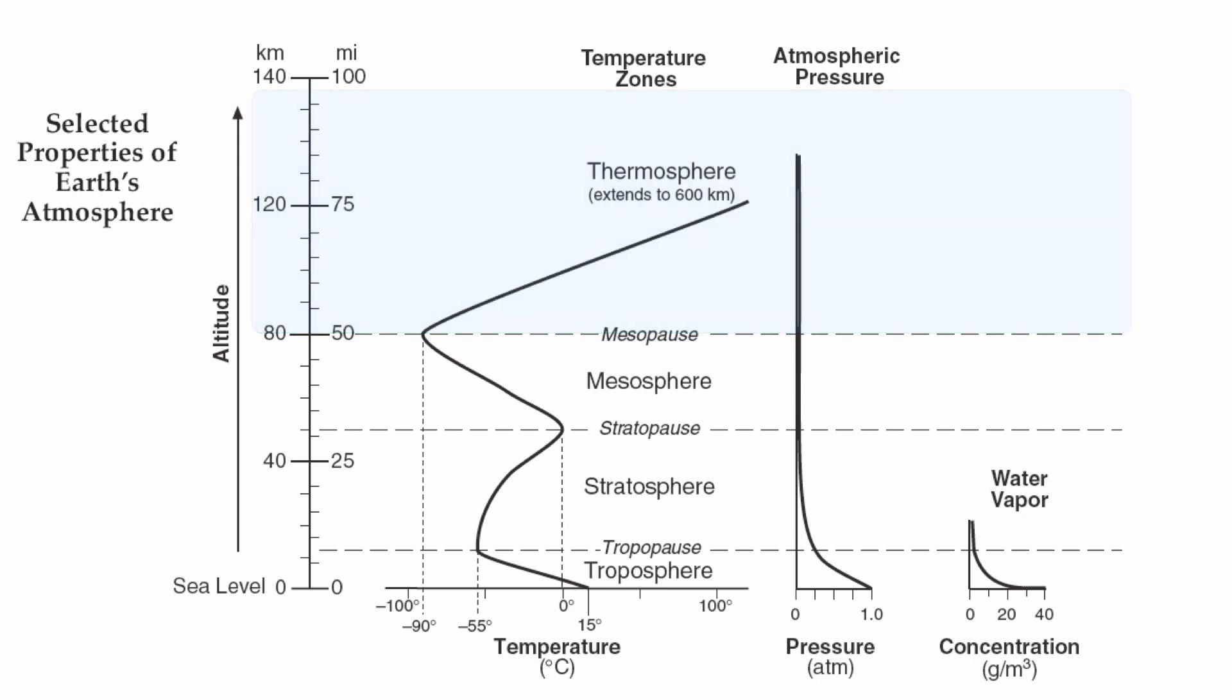Well, where one layer ends, the other one begins. There is a definite boundary between each layer. And those are going to be represented by the words with the suffix pause. So where the troposphere ends and the stratosphere begins, that's the tropopause. Where the stratosphere ends and the mesosphere begins, stratopause. And where the mesosphere ends and the thermosphere begins, that's what we call the mesopause.